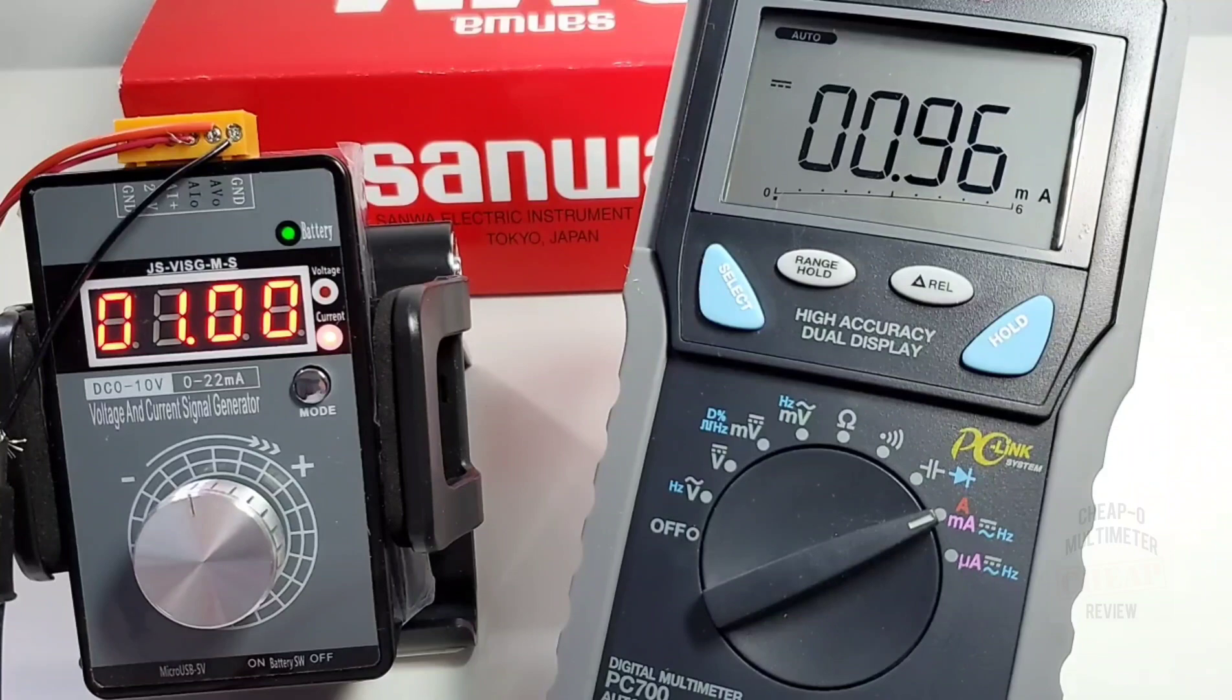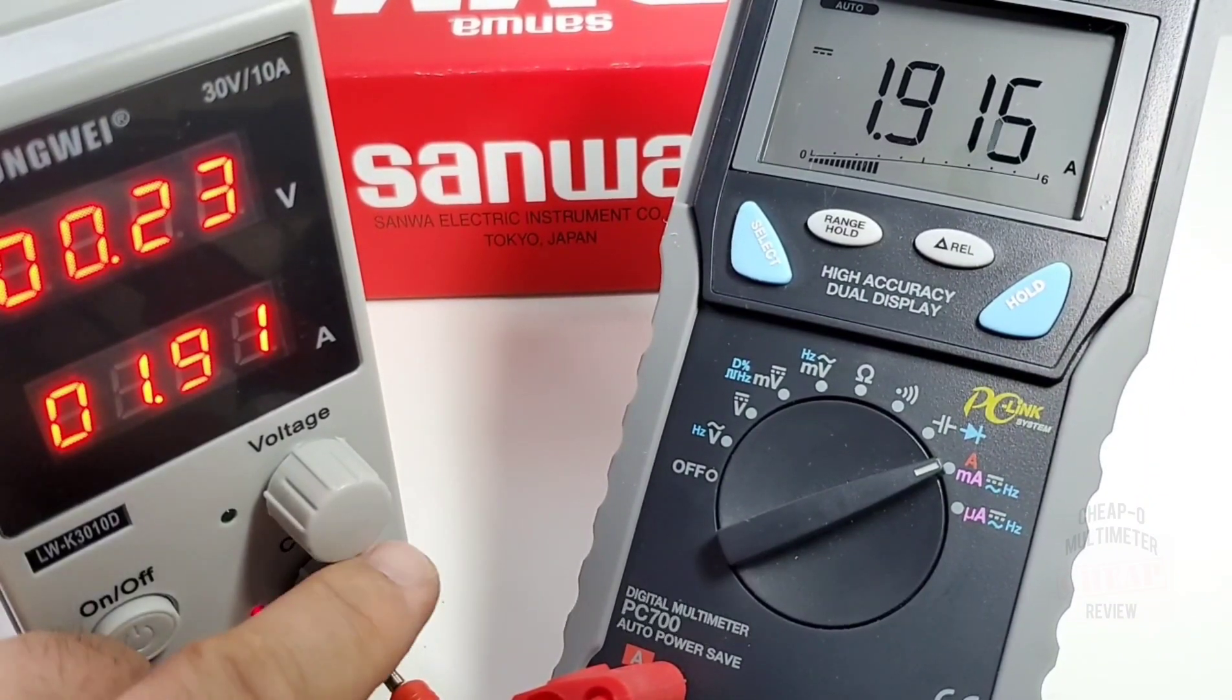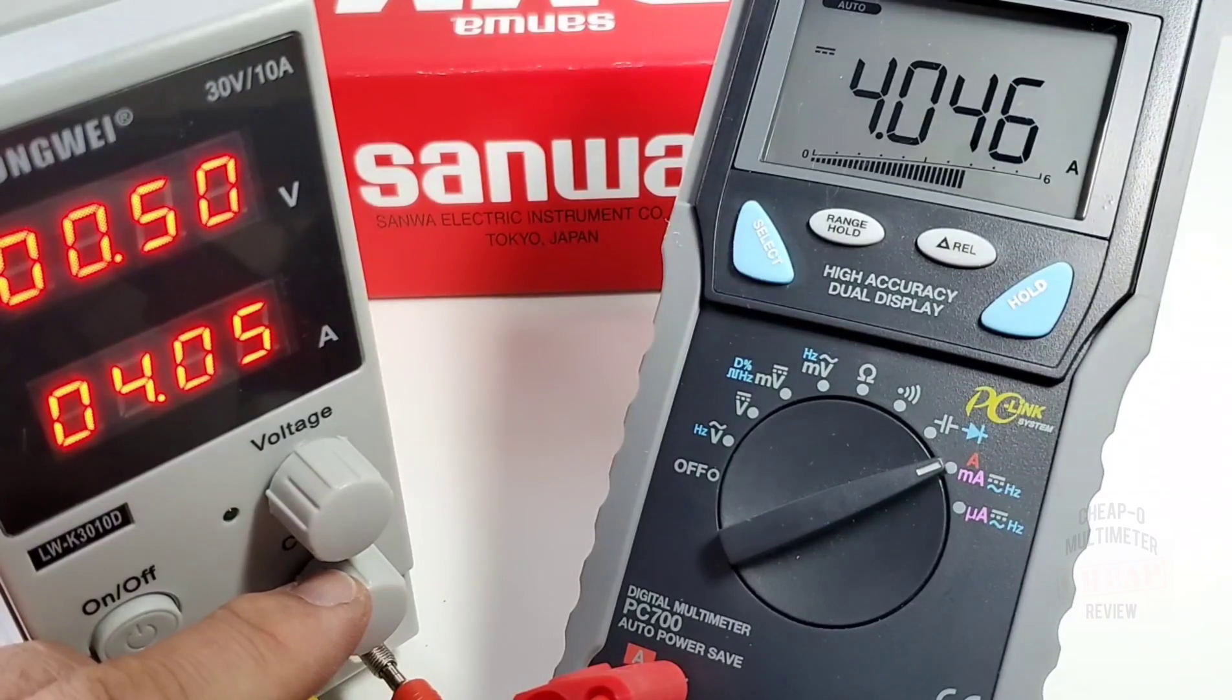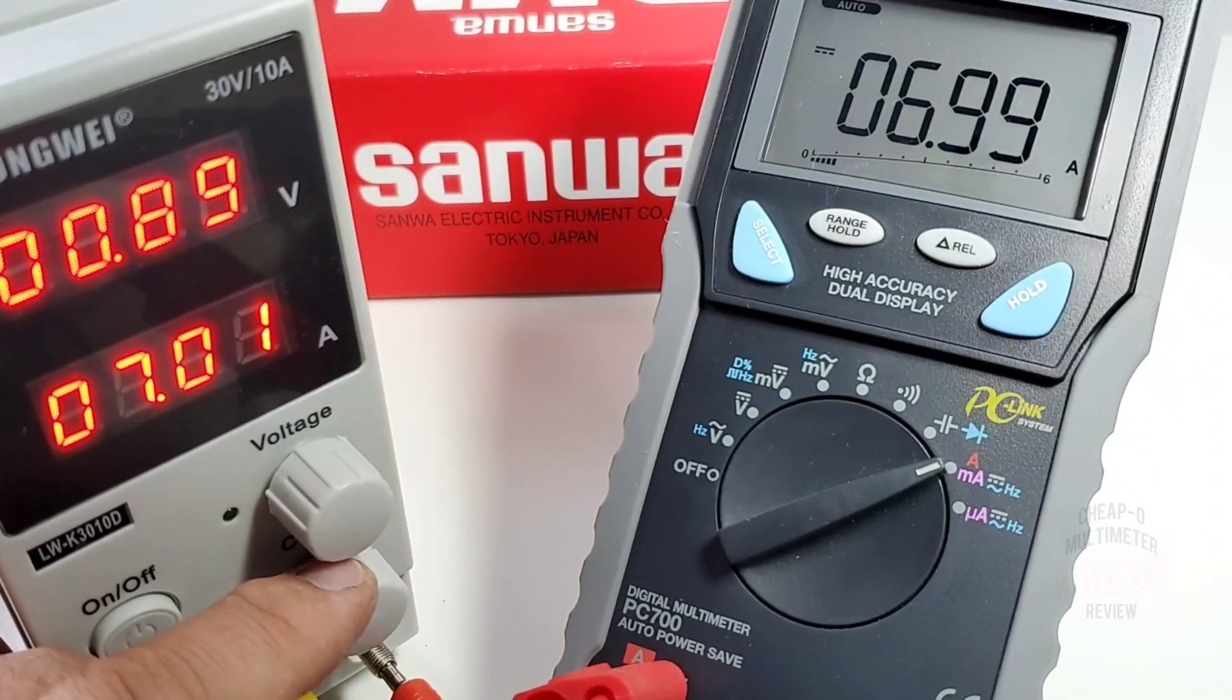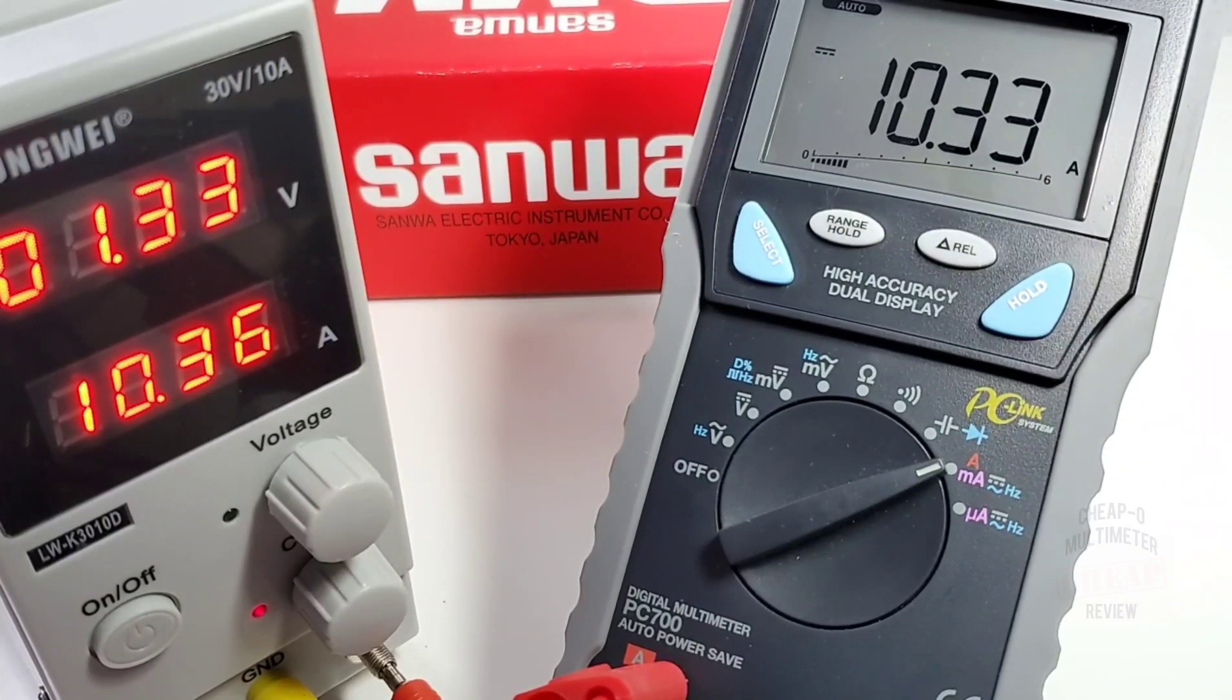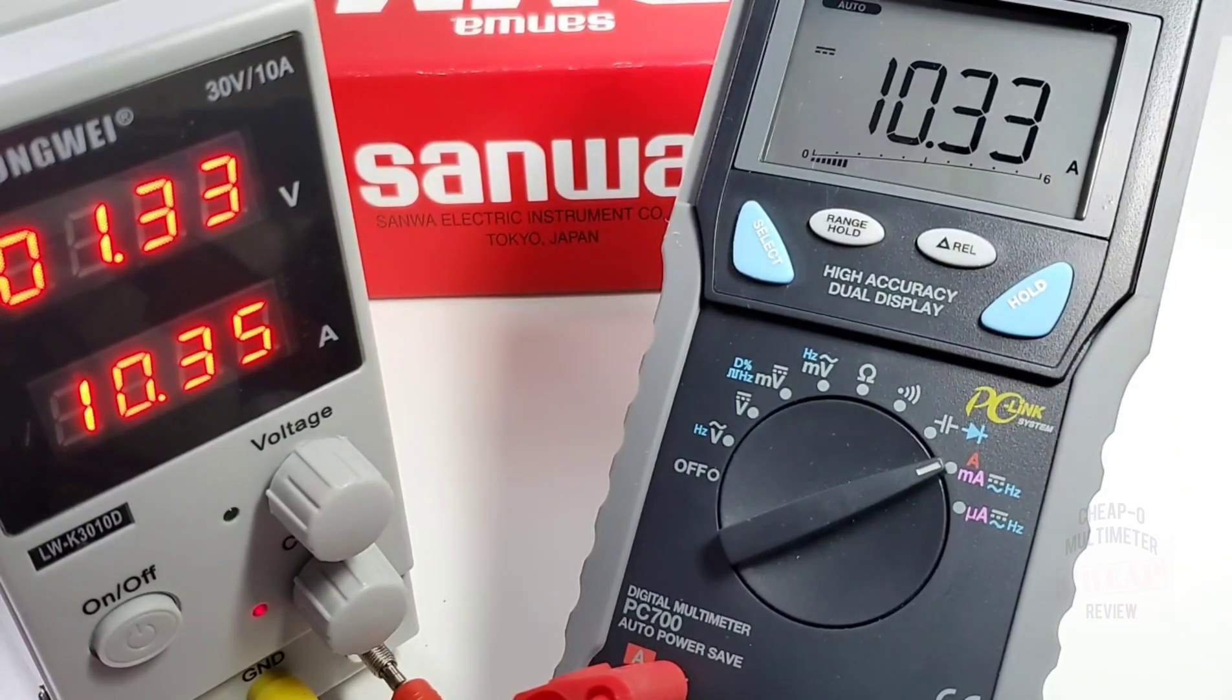Finally we're going to take a look at high current. You got 1.91 amps, no worries here. Let's take it up, 2.68 amps for the Sanwa. 4.05, 4.046, oh so close. Up and away, 7.01 amps, 6.99 on the Sanwa. We're going to max it out now, 10.35 amps, 10.33 for the Sanwa. There you go, this is one really accurate meter.